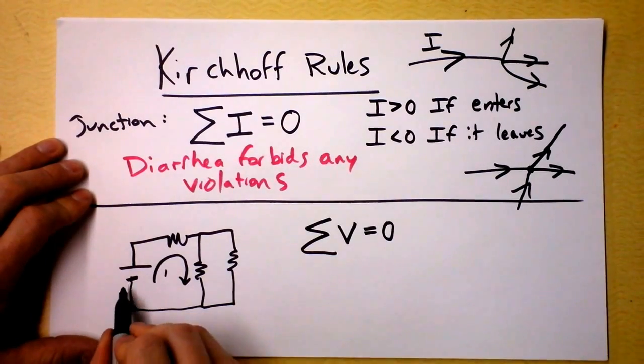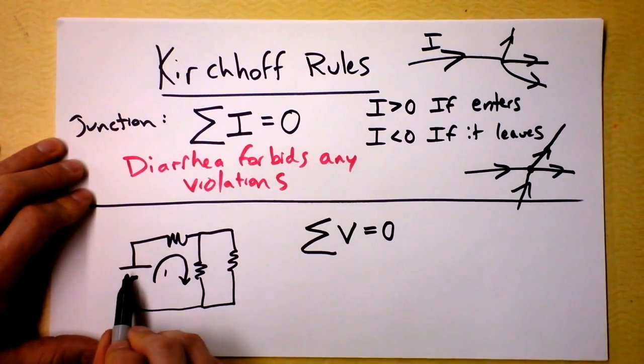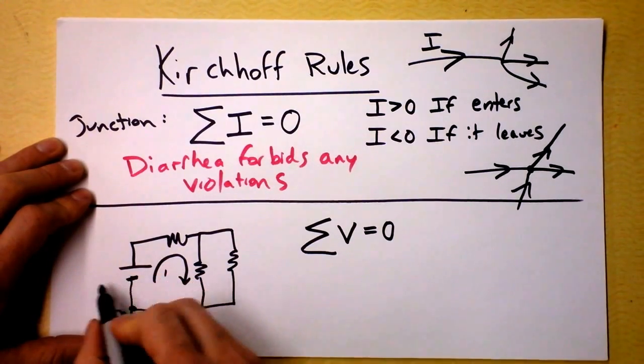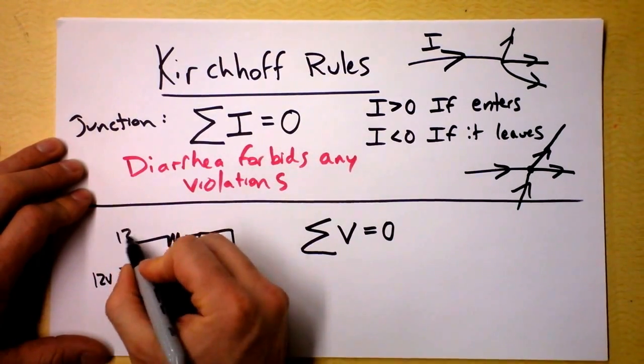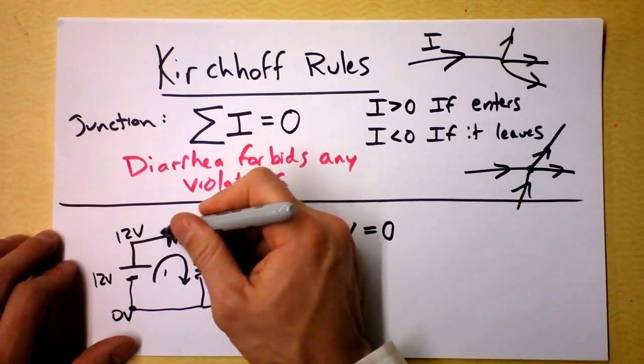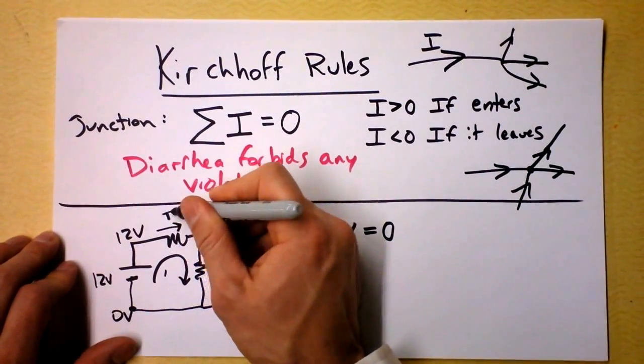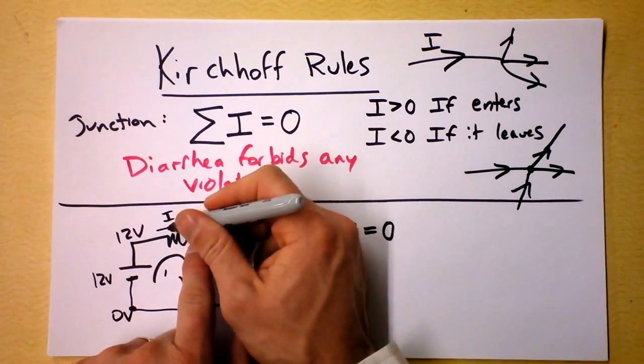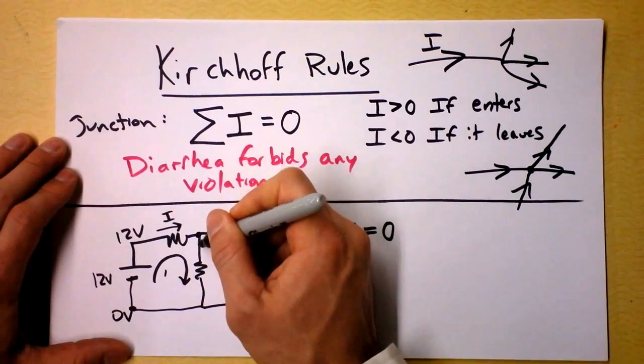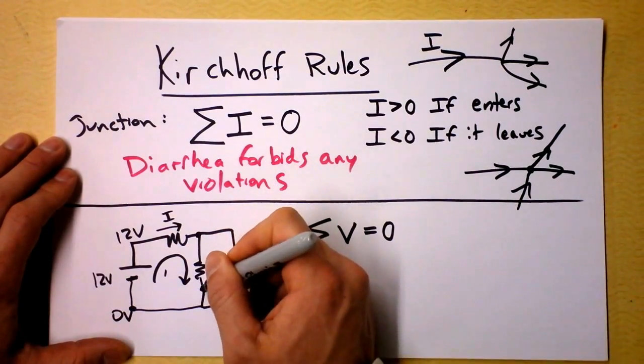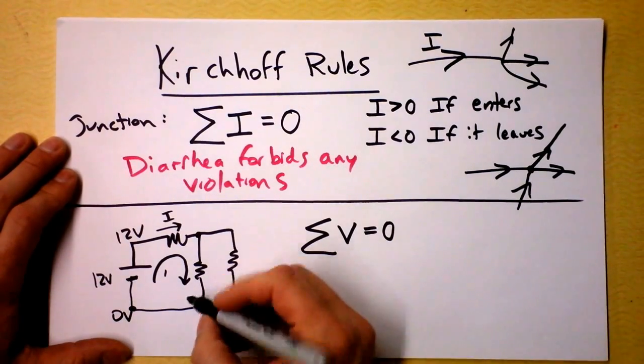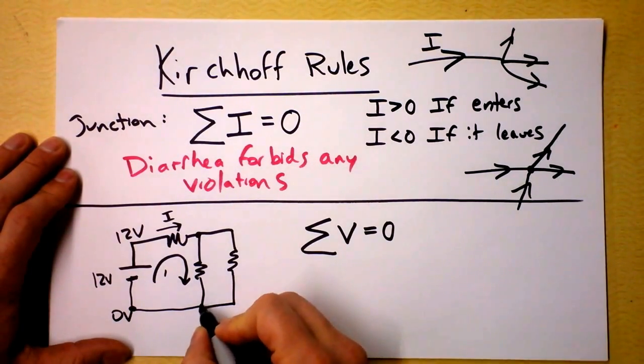A way to mathematically say that is that the sum of all the potential changes is zero. So here, as I'm going around this direction, the potential is going to rise as I go through the battery. It will go probably from zero volts up to whatever the voltage of the battery is. Let's call it 12 volts. And then as I go through a resistor in the direction of the current, I'll get a voltage drop equal to IR. And as I continue my loop, I will drop the voltage again through that resistor. And the statement of Kirchhoff's loop rule is that when I get here, I'm at zero again.